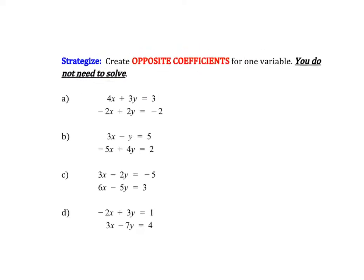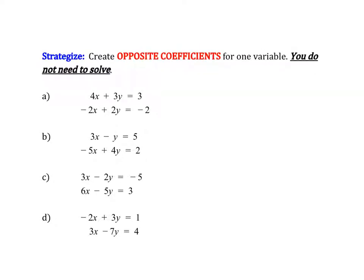Before we talk about the full solving process, we're going to do a few strategizing problems. We're going to look at different systems and see if we can strategize how to create opposite coefficients. Often there are multiple ways to do it, so we'll just talk about one way for each set. Notice we do not need to solve — our goal here is just to create opposite coefficients.